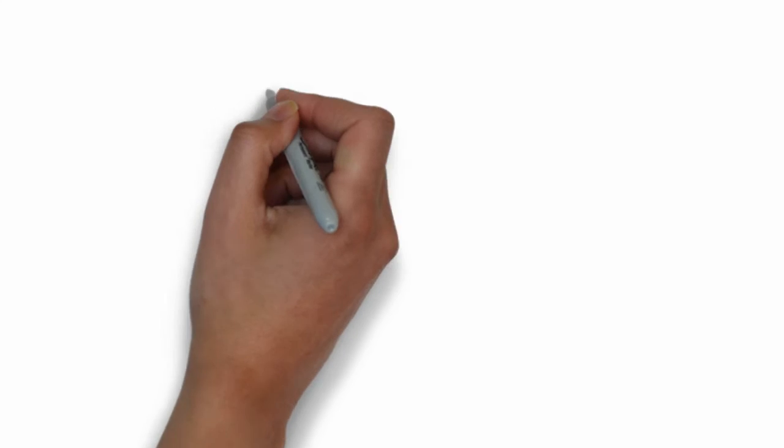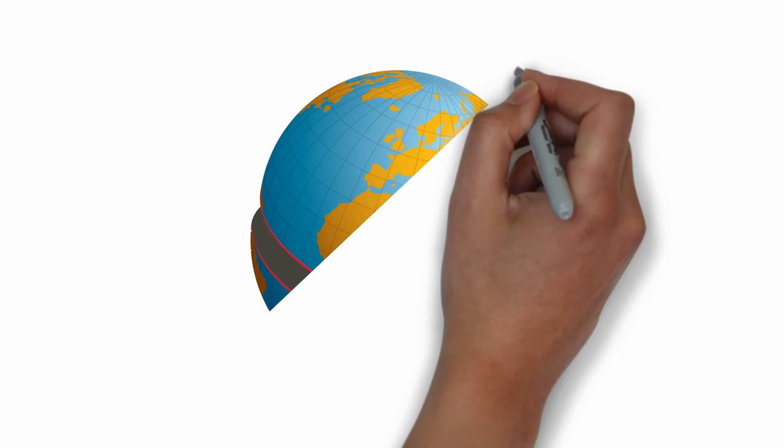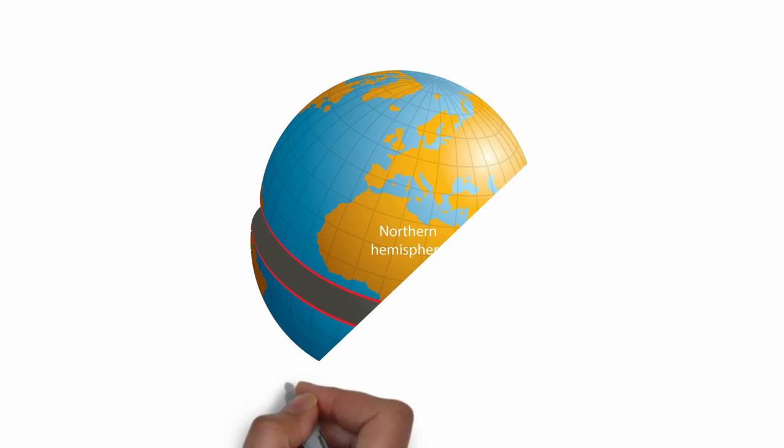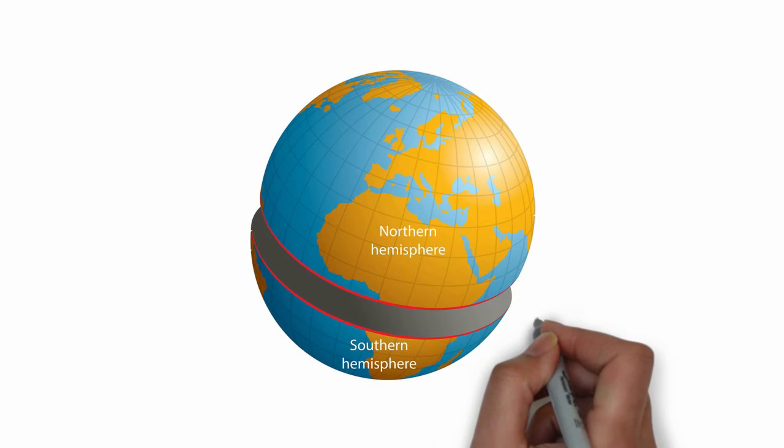First, the building should be oriented where maximum light can be received. For northern hemisphere, it will be south, and for southern hemisphere, it will be north.